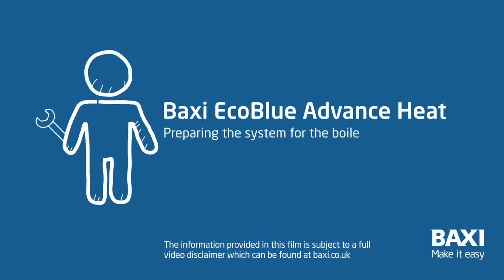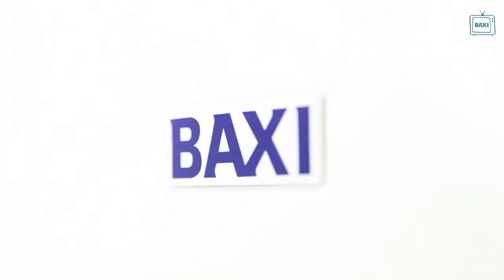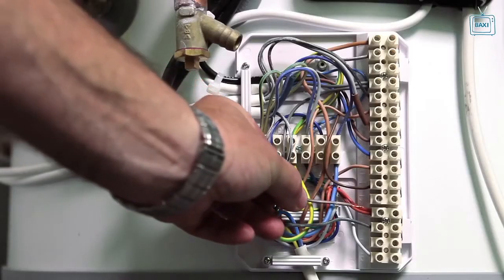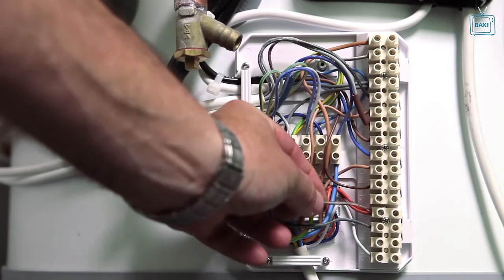We explain what you need to do and think about before installing a new EcoBlue Advance Heat boiler. Baxi EcoBlue Advance Heat can be fitted on open vent and sealed systems, but must be operated by the switch live from the two-channel controller.